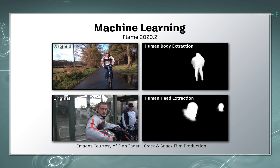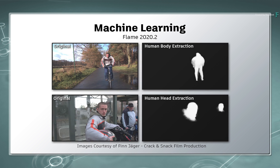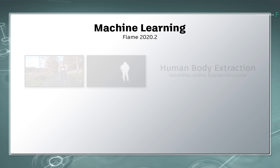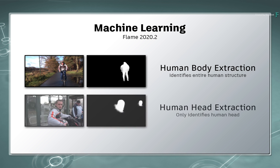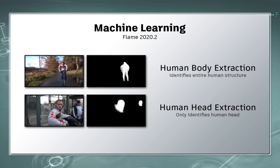Both Machine Learning models allow Flame to look at an image and identify parts of the human body. Human Body Extraction attempts to identify the entire human structure, whereas Human Head Extraction concentrates purely on the human head.